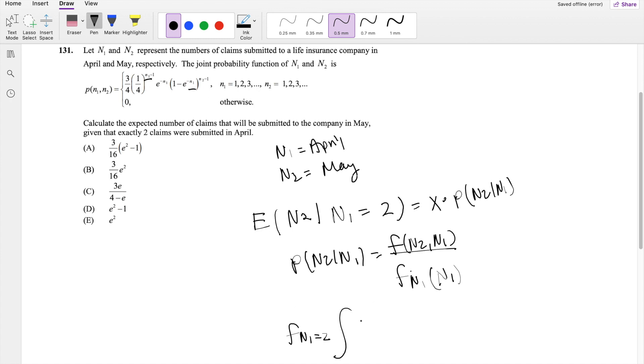So you're going to get 3 fourths, 1 fourths, and 1, 2 minus 1, that's just 1, e to the negative 2, 1 minus e to the negative 2, and N2 we don't know, minus 1.